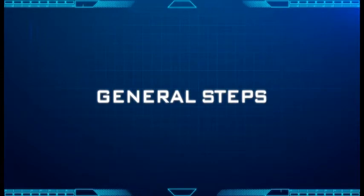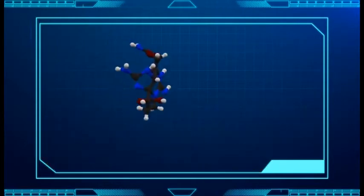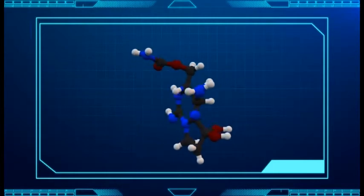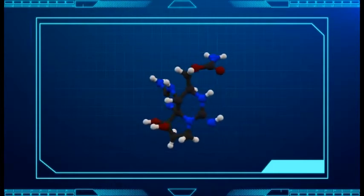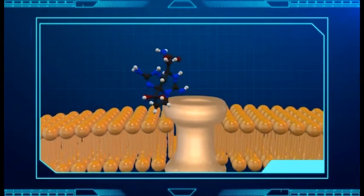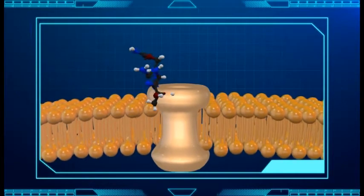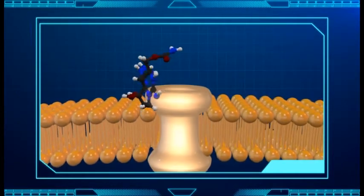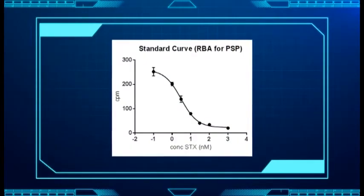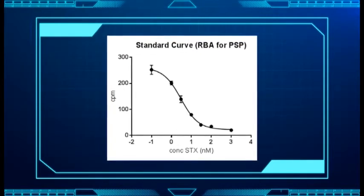General Steps. RBA, as applied for PSP toxin detection, is in the form of a competitive radioligand binding assay. A radiolabeled ligand, usually in the form of tritiated saxitoxin, is made to compete with PSP toxins in your sample for binding to the same receptor site in sodium channels. Since PSP toxins will bind to the receptors at an affinity equivalent to their toxic potency, the amount of remaining receptor-bound tritiated saxitoxin can be used as a measure of the total toxicity of the sample.